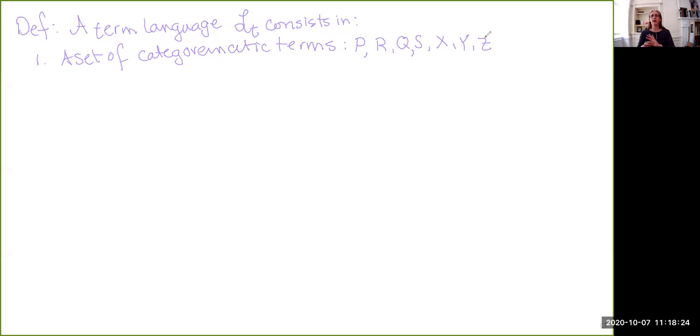But for purposes of illustration, this set can either be finite in the sense that it is limited or bounded, or infinite. For instance, if you want to have one categoromatic term for every single number that exists, that would be fine.